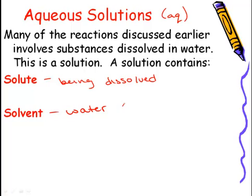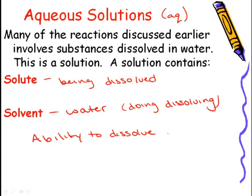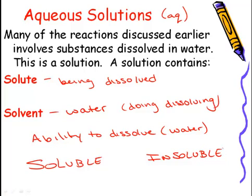This makes 'solution' different in chemistry speak compared to everyday speak. Let's talk about a substance's ability to dissolve — specifically in water. We're going to use the terms soluble and insoluble to describe whether or not it can dissolve in water. If it's soluble, it's going to be able to dissolve. If it's insoluble, it's not going to dissolve — it's going to result in a solid. Where soluble will dissolve, we'll use AQ to show that.